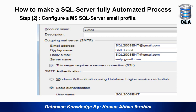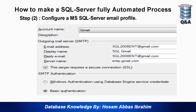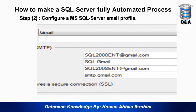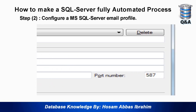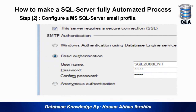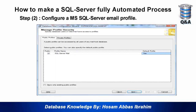For the account, I write the account name and description, put the Gmail address I created, set the display name to 'SQL Gmail', set reply email to the same address, and then the server name — this is very important, it is the SMTP server for Gmail. I will leave that in the video description. Enter the port number, choose Basic Authentication, enter the Gmail username and password, and press Next.